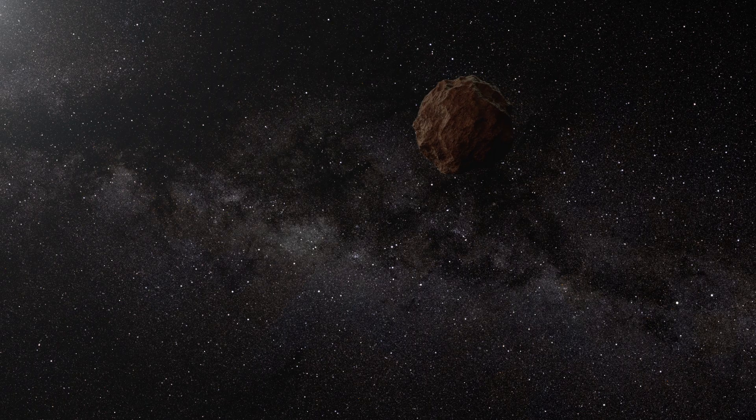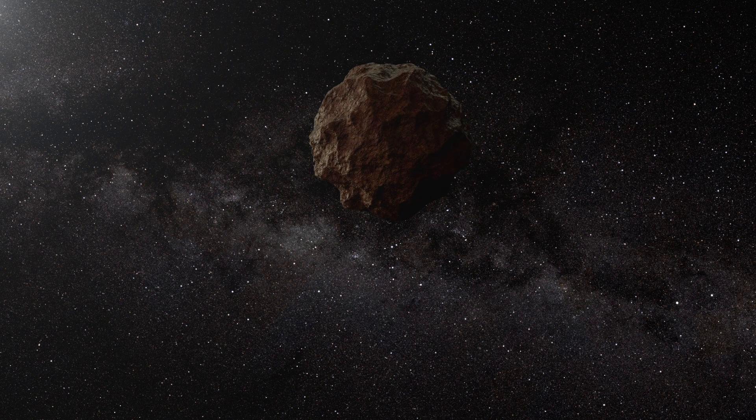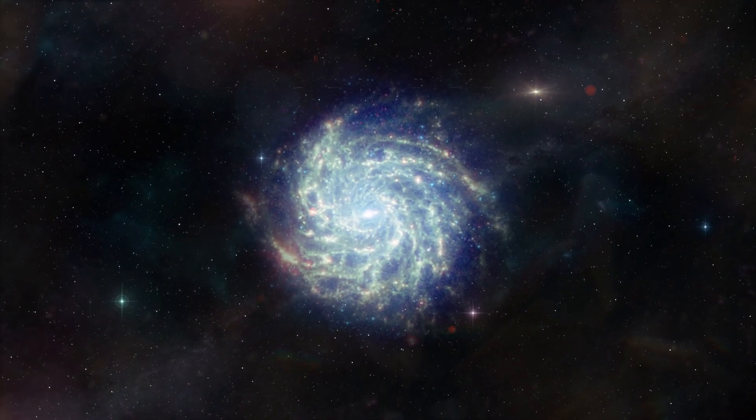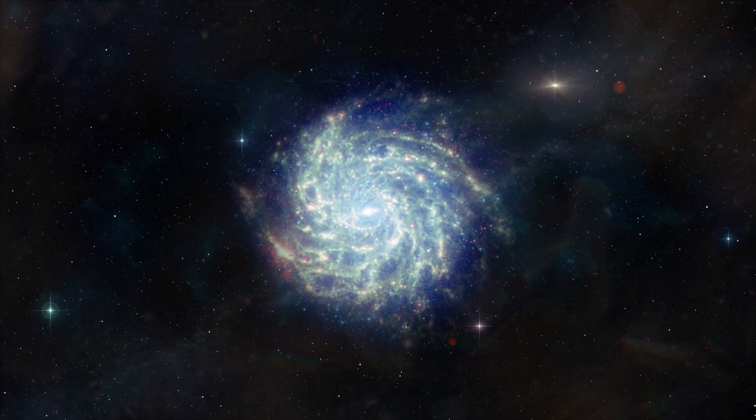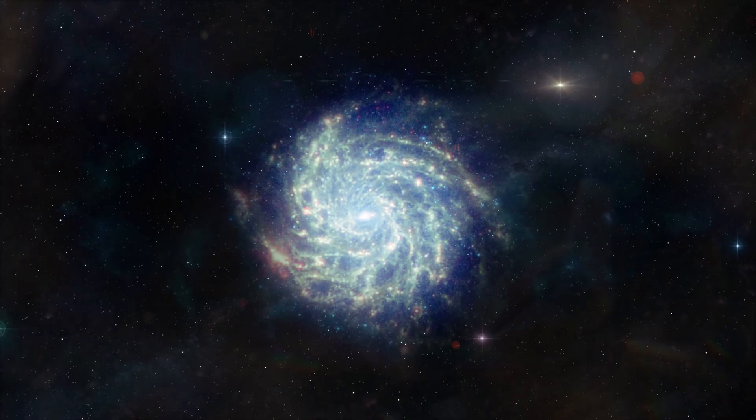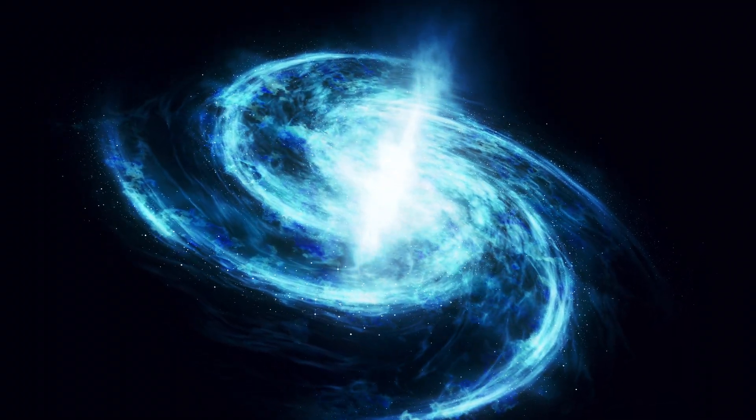When zooming out from the solar system and the Milky Way, a fascinating pattern emerges: the cosmic web, the largest structure in nature. At this scale, entire galaxies appear as tiny points of light.